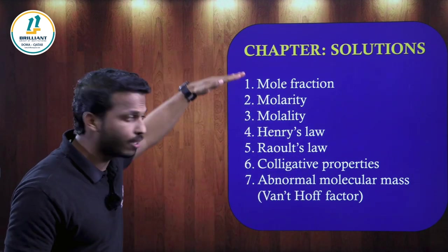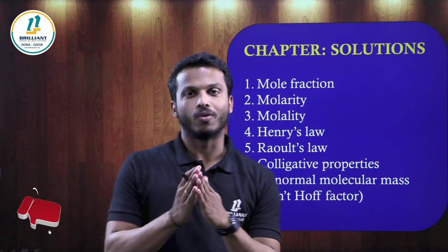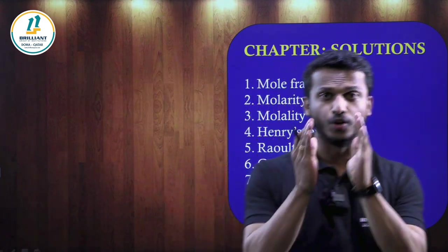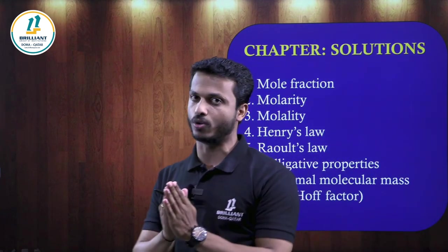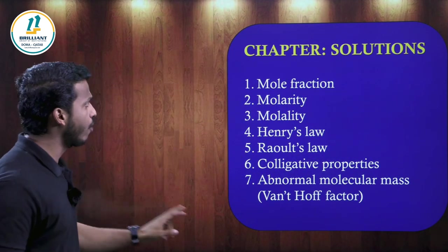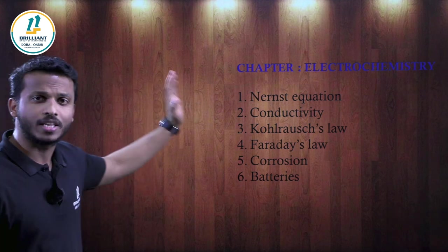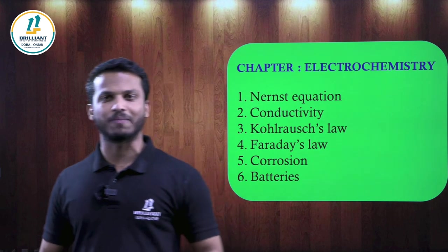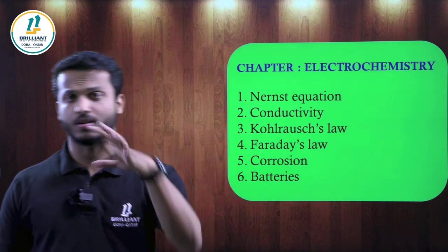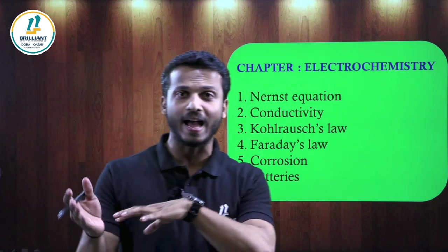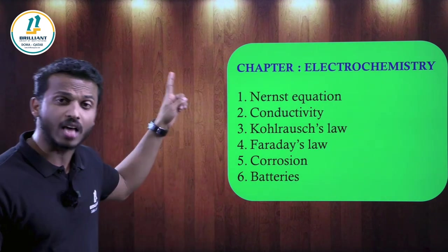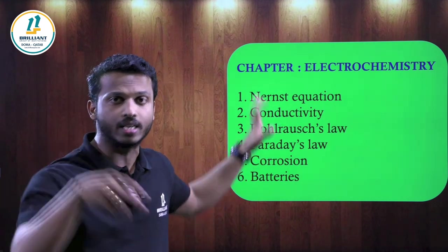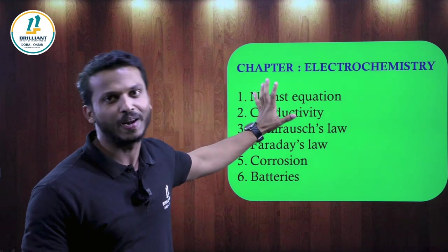These are the main concepts in the Solutions chapter — both numerical and theory-based questions are expected. Now let's go for the next chapter: Electrochemistry. It is also a physical chemistry chapter, so expect both theory and numerical-based questions. This is a high-weightage chapter in Grade 12 Chemistry — around nine marks can be expected from electrochemistry.